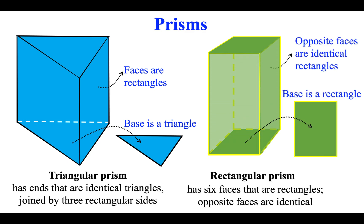Rectangular prism has six faces that are rectangles. Opposite faces are identical.